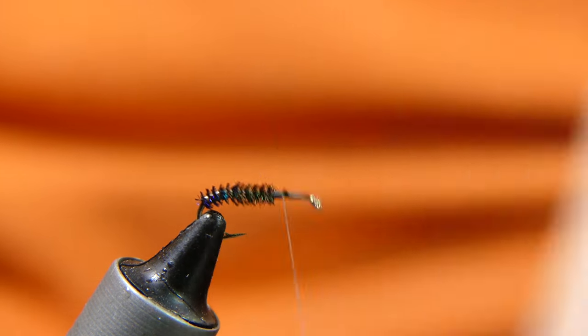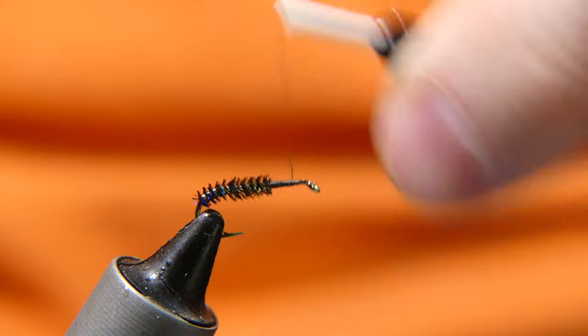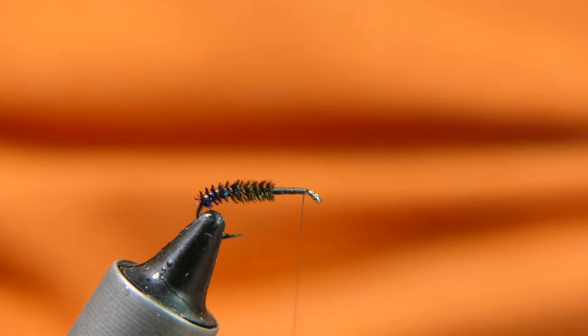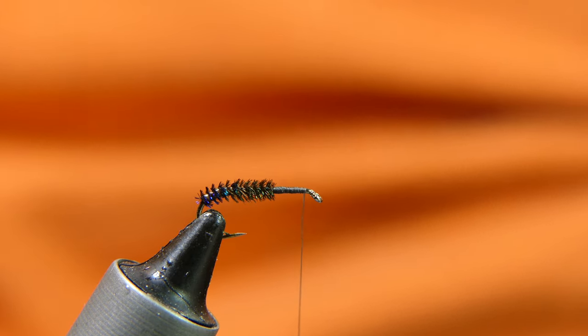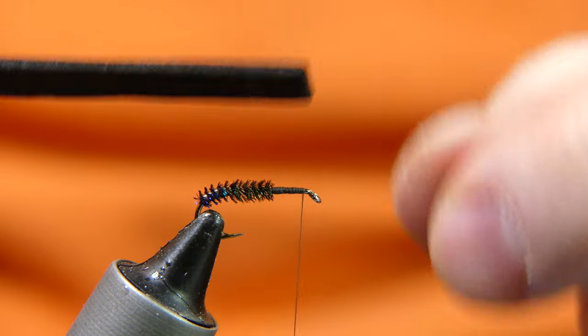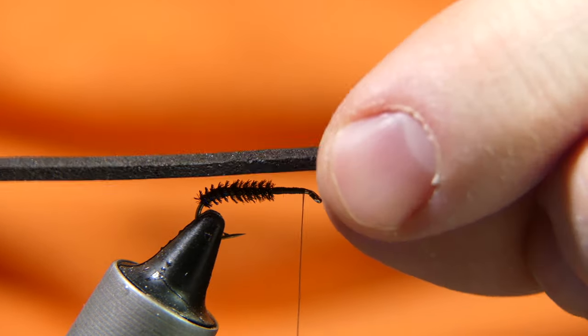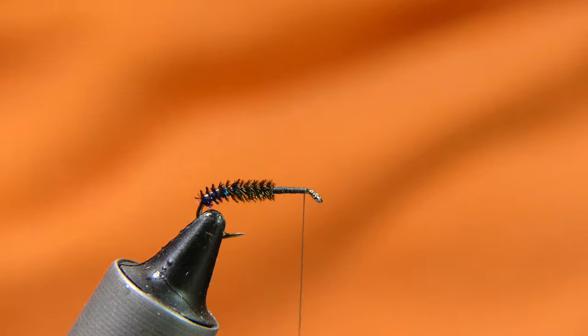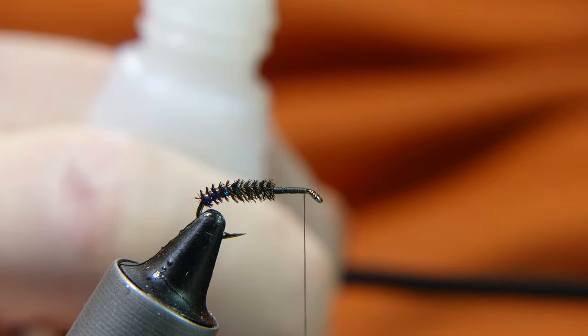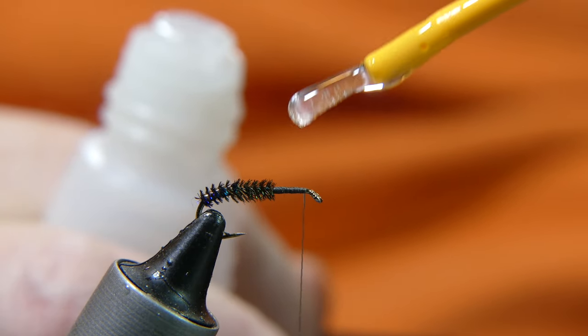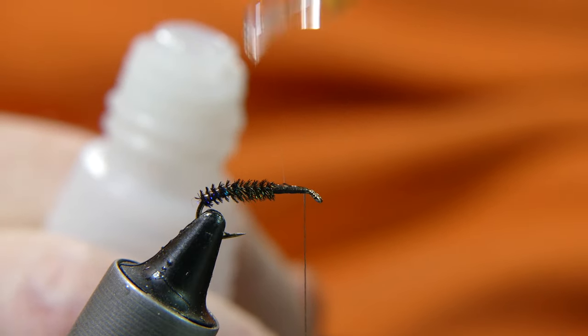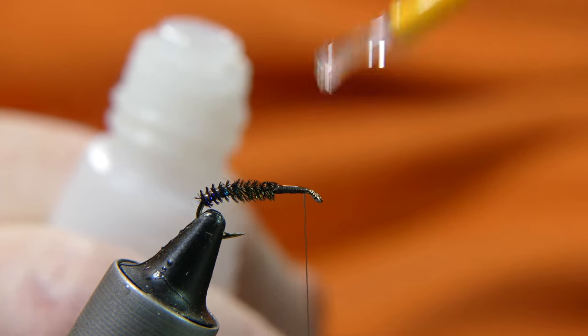All right, from here take your thread back up to behind the eye, maybe half an eye length behind it. Here we're going to tie in a piece of 2mm black foam that I cut to a little strip. Take some super glue. Go ahead, dab it on your thread, just a little bit, not a lot. Just a little bit into the herl too, just the beginning of the herl.